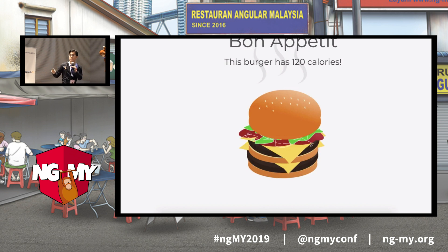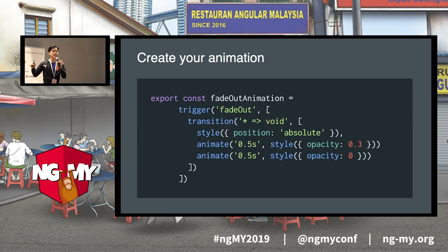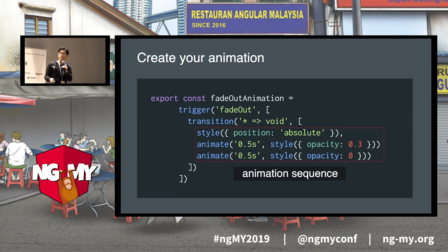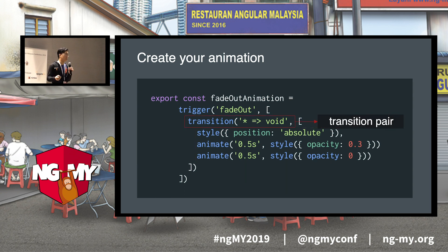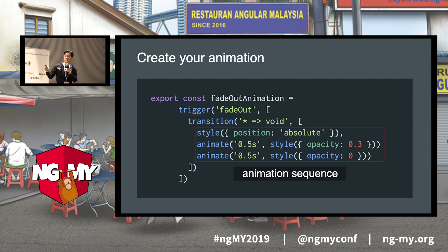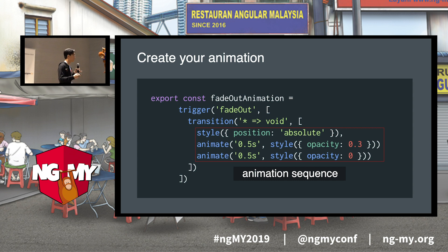What we can do is use Angular animations. This is the anatomy of an Angular animation: it starts with a trigger name, a transition pair, and your animation sequence. You'd read this as: if a trigger goes through this transition pair — starting from any state and going into a void state, essentially leaving the page — we animate it this way. You can think of the animate functions as keyframes in your CSS animation, running one by one.